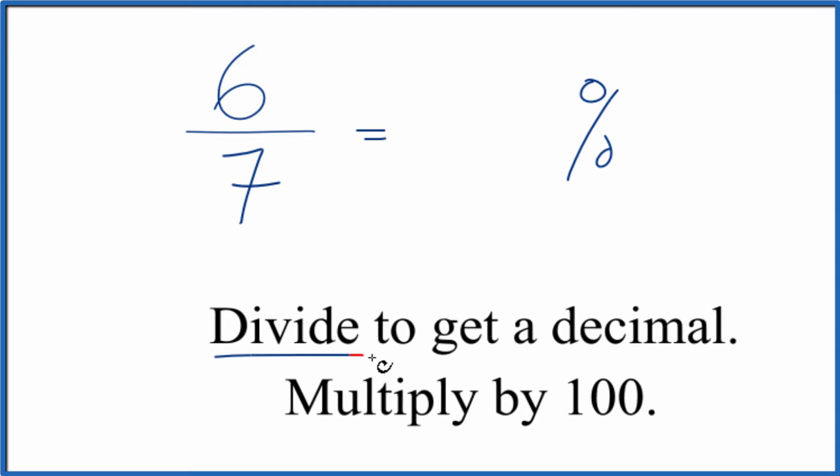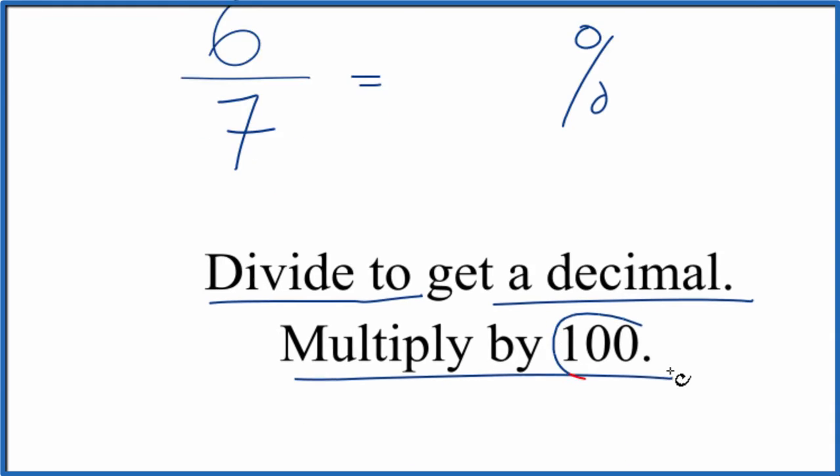The way we do that, we divide 6 by 7, that gives us a decimal. We take that decimal and we multiply that by 100.